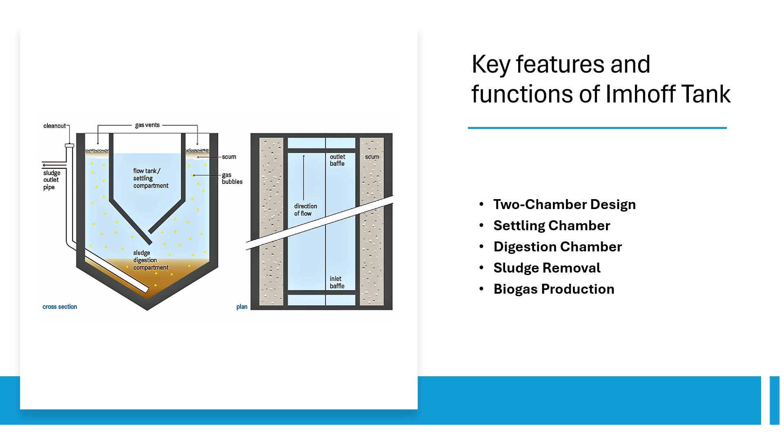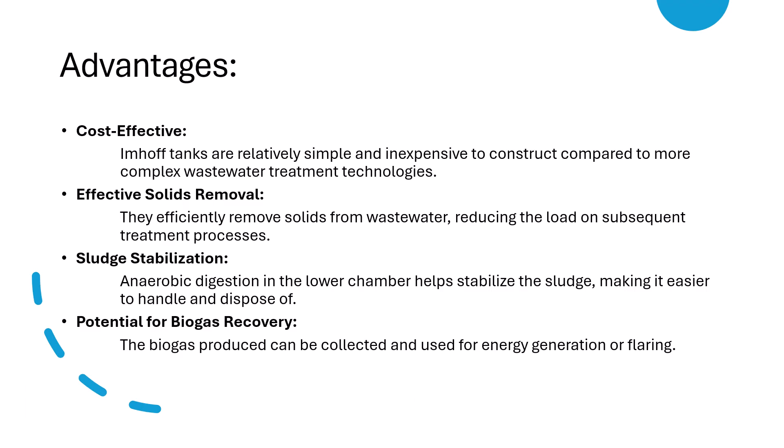Settled solids move into the lower digestion chamber, where they undergo anaerobic digestion — that is, the breaking down of organic matter — producing biogas. The digested sludge can be removed and further treated or disposed of. Anaerobic digestion in the lower chamber generates biogas, which is a mixture of methane, carbon dioxide, hydrogen, and hydrogen sulfide.